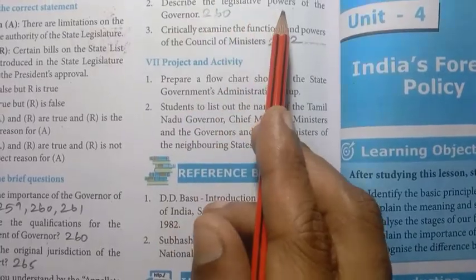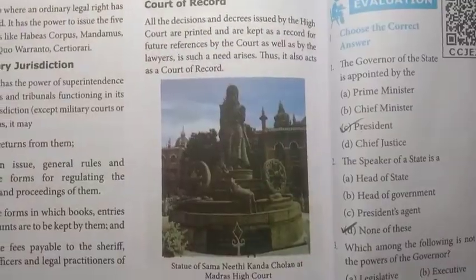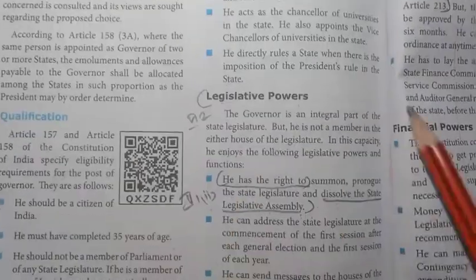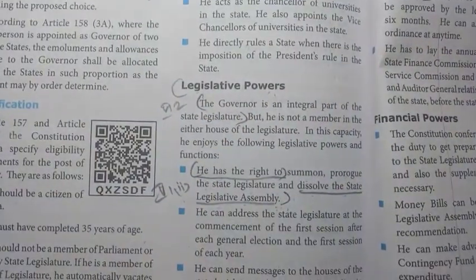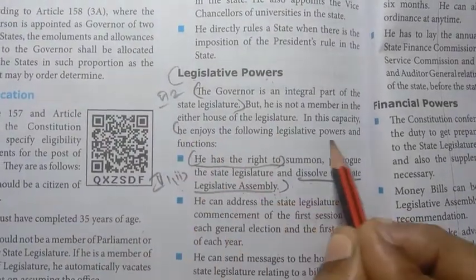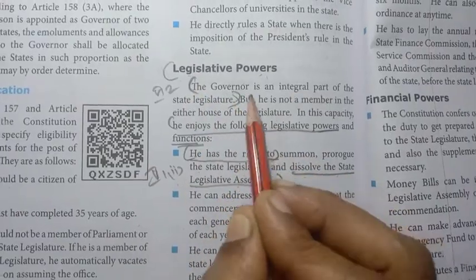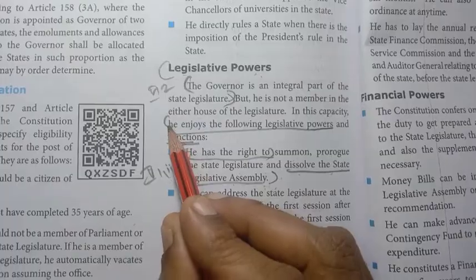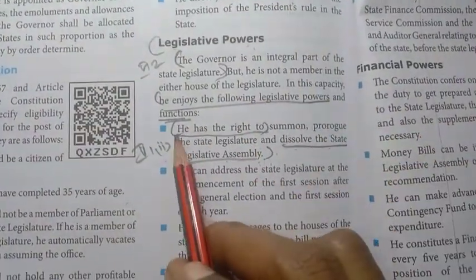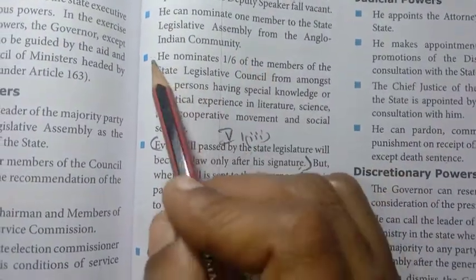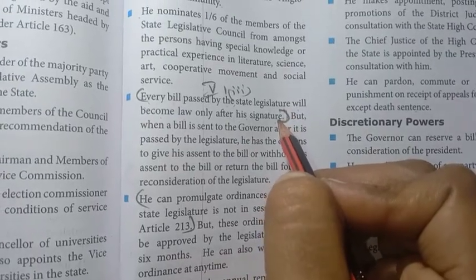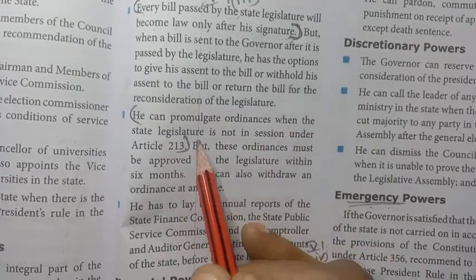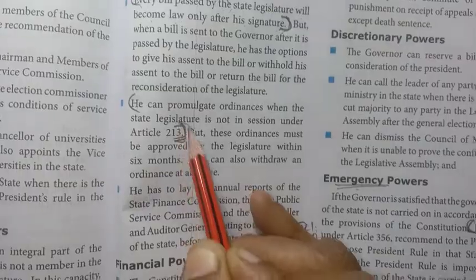Second detail question: describe the legislative powers of the governor. Page number 260. The governor is an integral part of the state legislature; he enjoys the following legislative powers and functions. Write points one through six fully from page 260, then the fifth point from page 261 fully, the sixth one fully, seventh – every bill passed by the state legislature will become law only after his signature – and eighth: he can promulgate ordinances when the state legislature is not in session under Article 213. Total eight points.